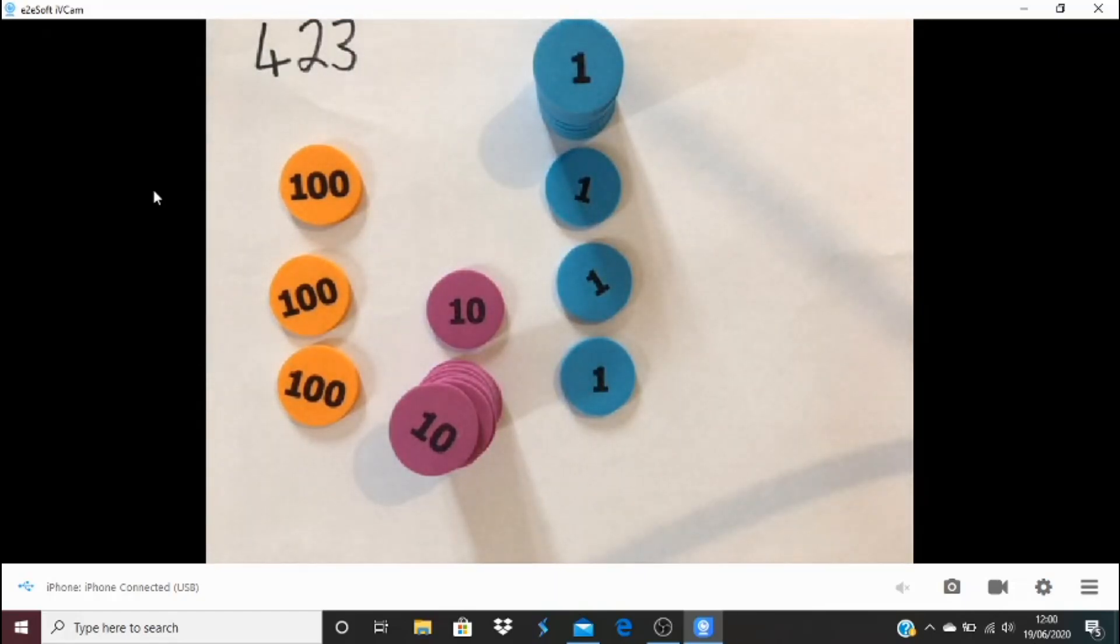So I took one 10 away, I put 10 coins in. In total, there's 9 more coins than there were. There were 18 coins, now there's 27 coins. And what do I have? I've got three hundreds, I've got 11 tens, and I've got 13 ones. That's just one of the ways it could have been done.